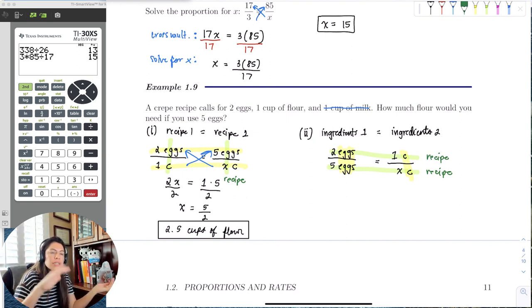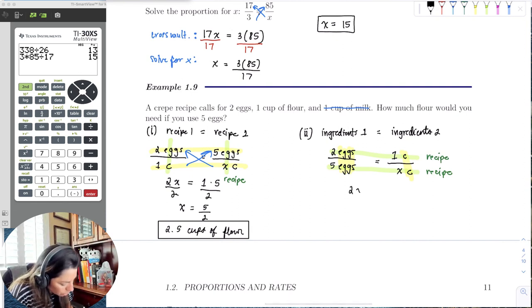So here's the recipe. So it just depends how you want to coordinate it. But either way, just keep recipe with recipe, units with units, and it'll all work out. But these are the two ways we could essentially do it. Because when we cross multiply, notice you still get 2x equal to 5, and x equals 5 halves, which is two and a half cups of flour.